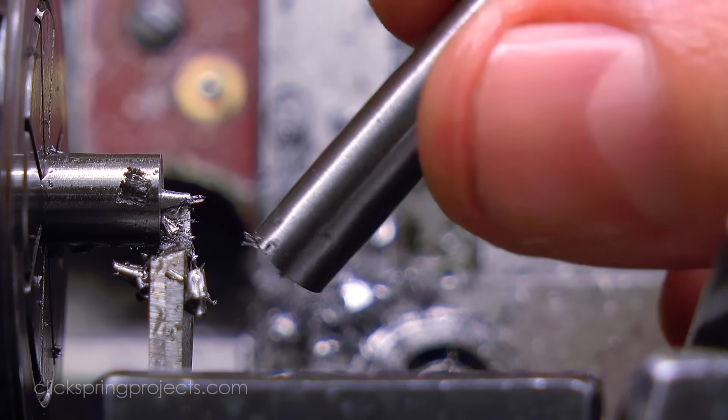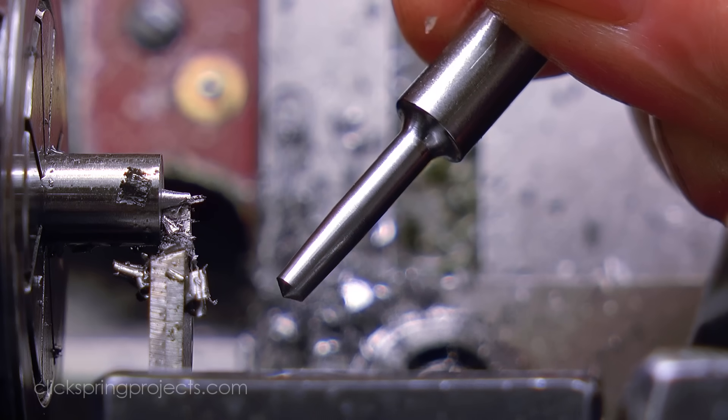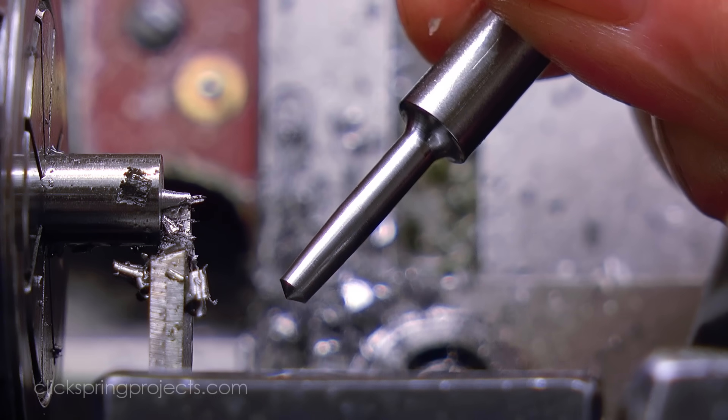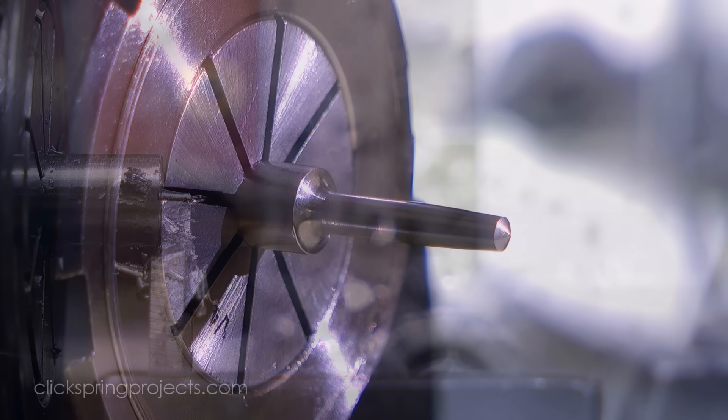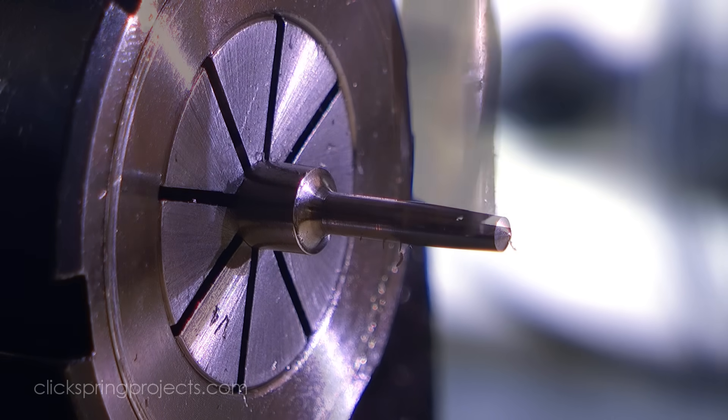The cutter starts out with a tapered profile and the barest of relief behind the cylindrical section that I mentioned previously, so that that section can be conveniently stoned to size after heat treating.